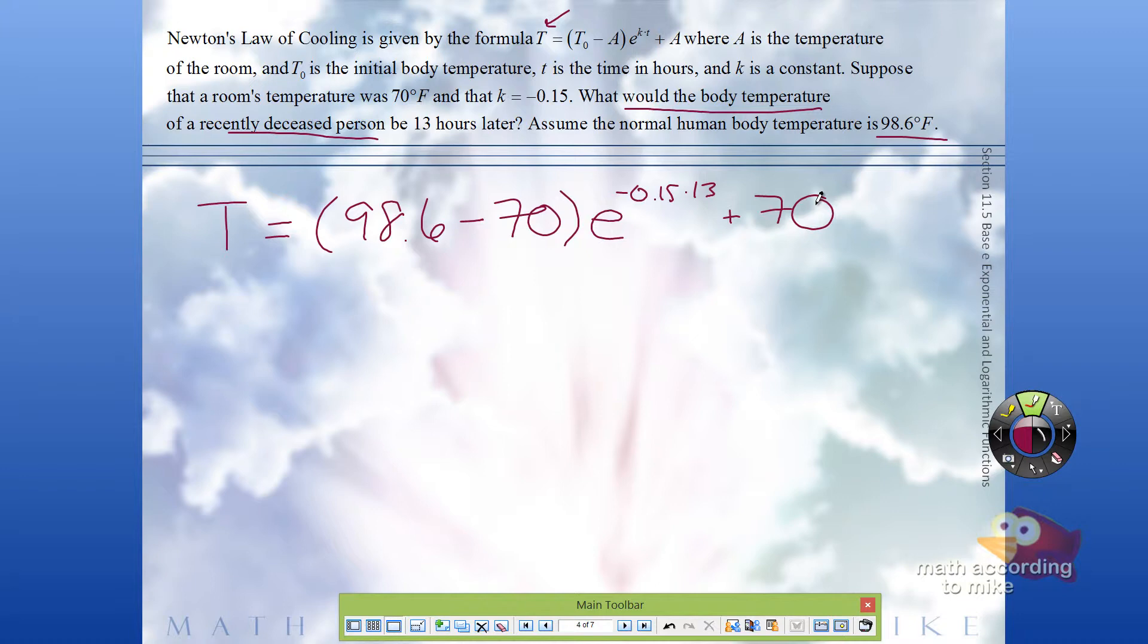Now I will tell you, in real life when forensic scientists are going to use this to figure out how long a body has been dead, they don't solve for big T. They know what big T is. They can take the temperature of the body. They're going to be solving for little t, and little t will tell them how long the person's been dead for, so they can gauge who was possibly there at that time. We don't know enough math at this point to be able to do that. In a couple sections from now we'll be able to solve for little t, but for right now we can only solve for big T.